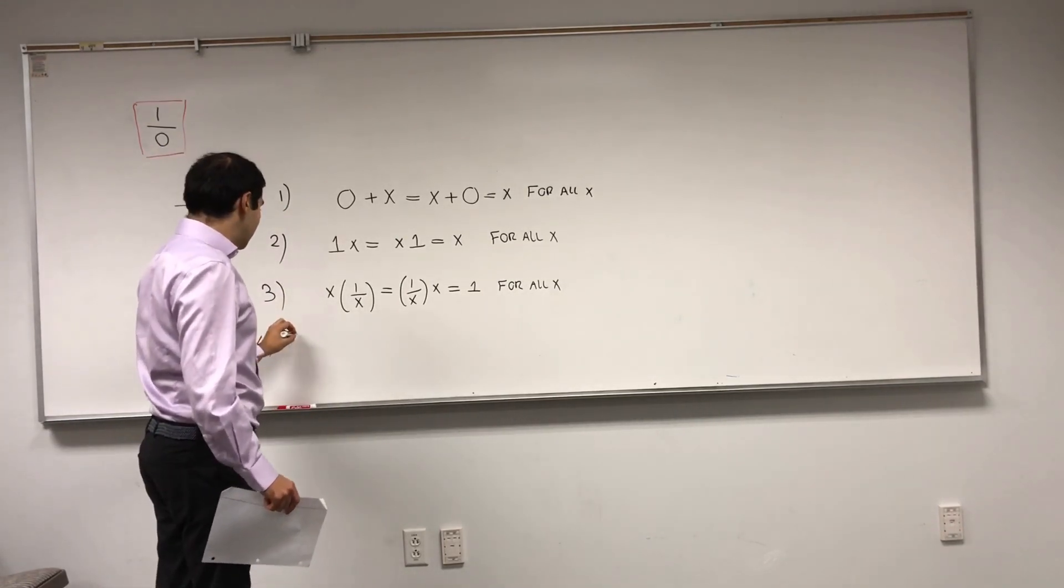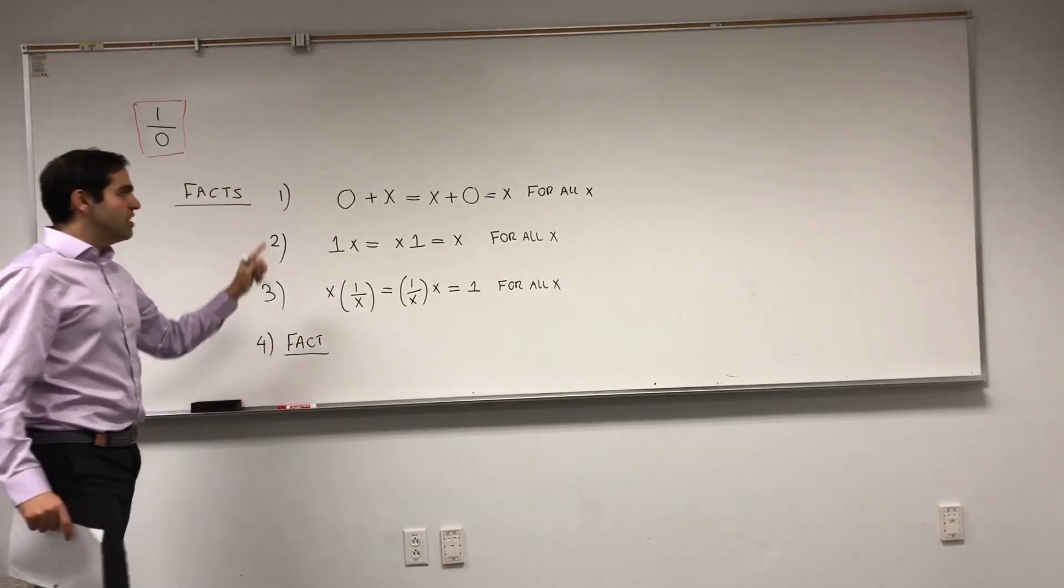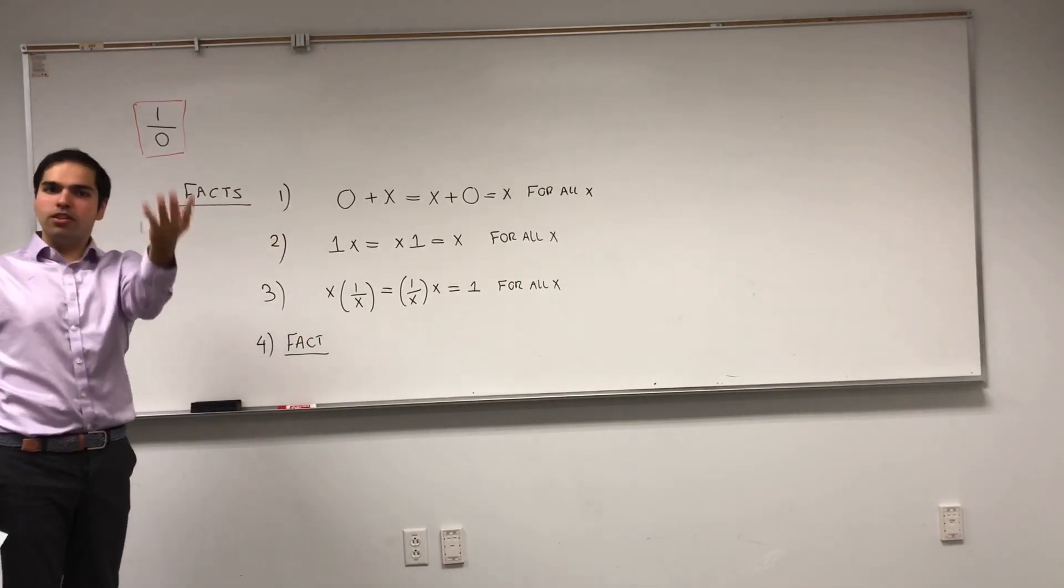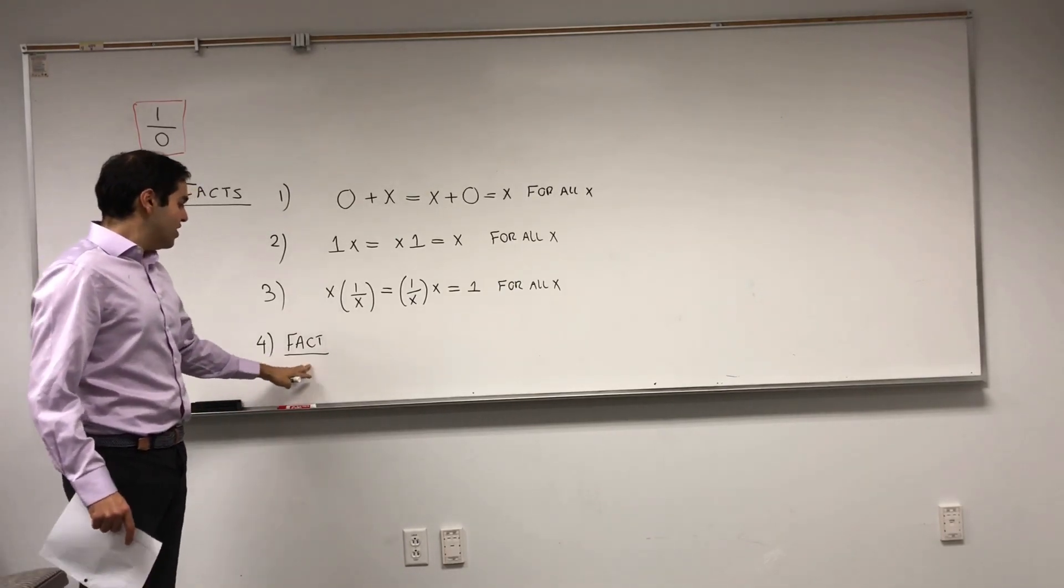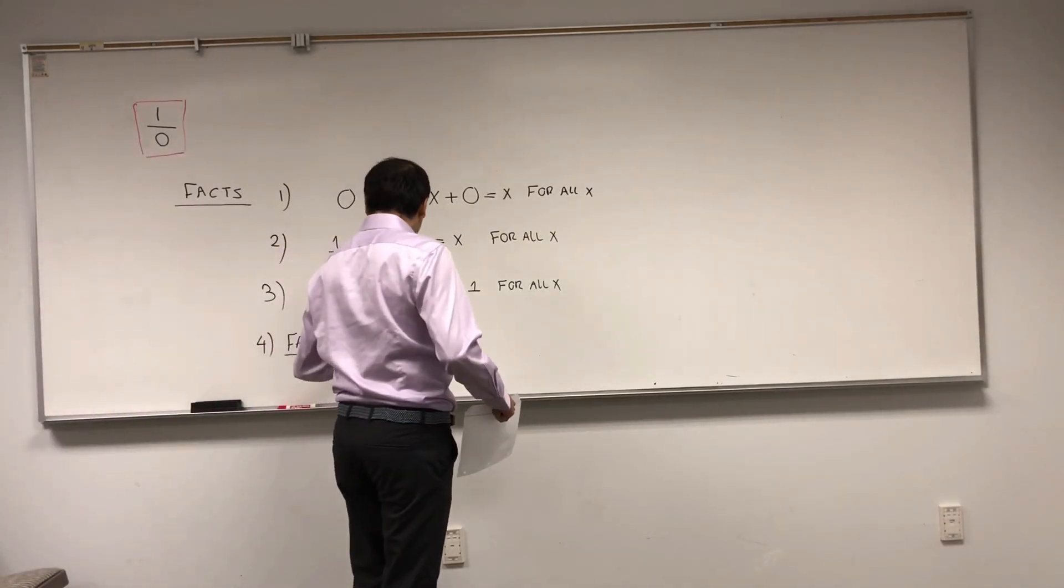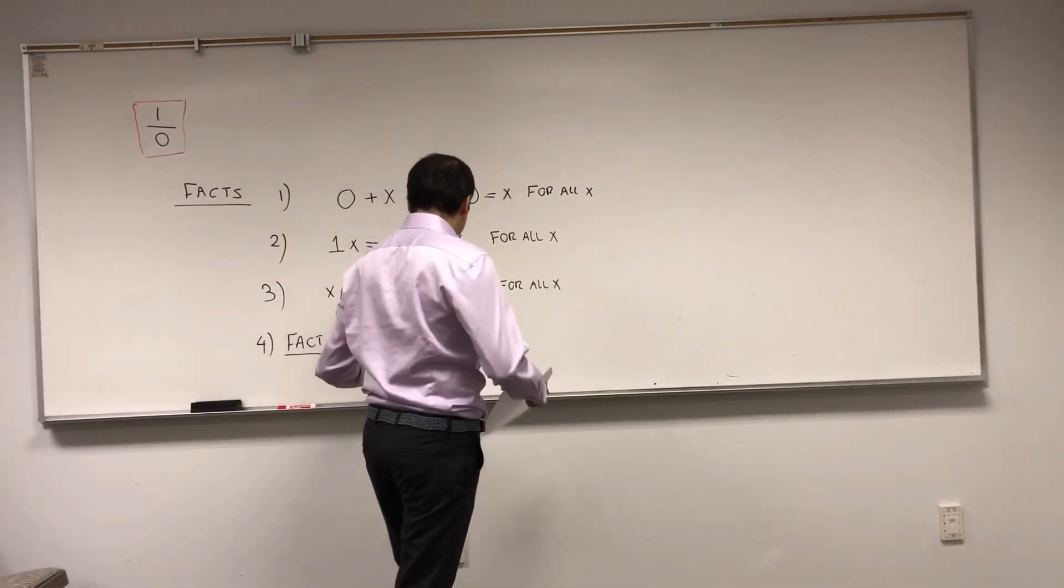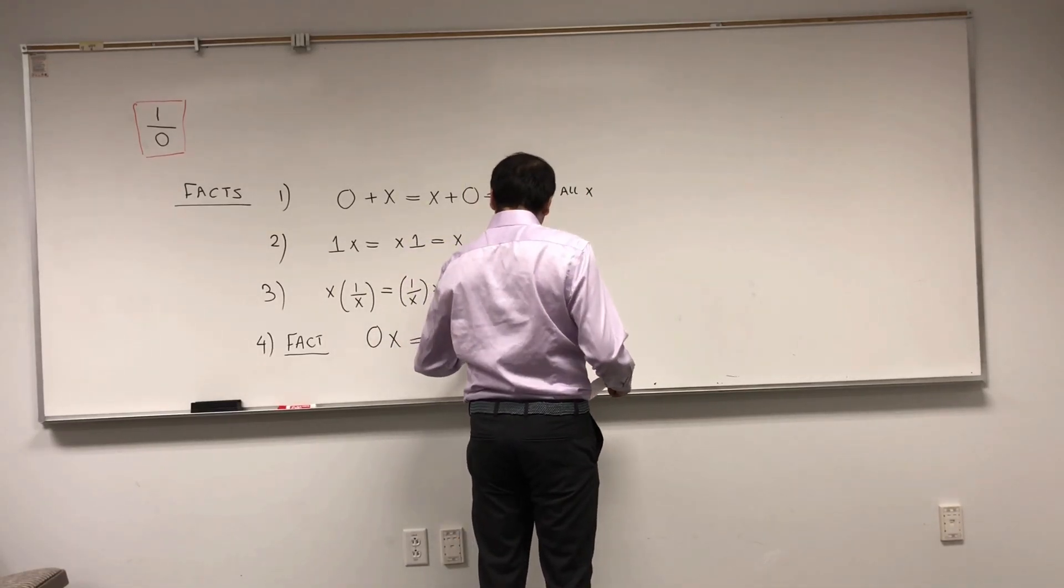And, lastly, we'll just need one fact, which seems obvious by what you've learned in high school, etc., but it's actually not that trivial. And, in the end, I will prove this. Namely, if you multiply 0 by x, you get 0. And, that's for all x.